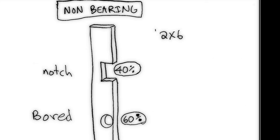Now let's look at a 2x6 non-bearing. If I'm going to notch a 2x6 that's 5.5 inches times 0.4 and once again I'm going to get 2.2 inches.